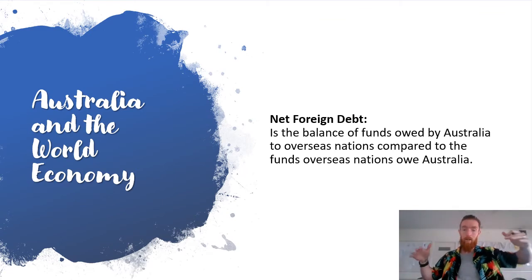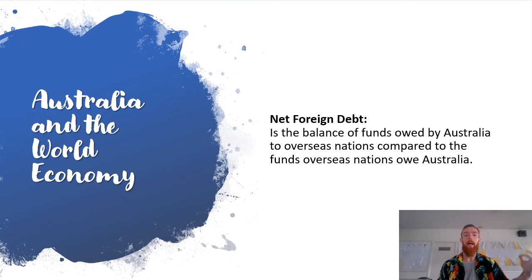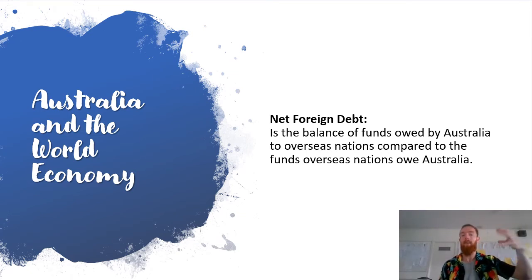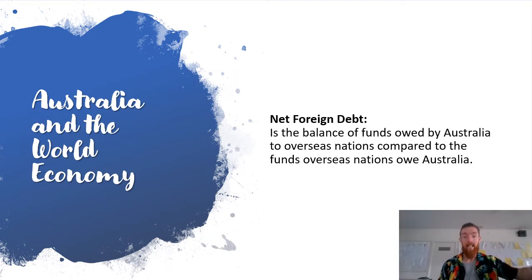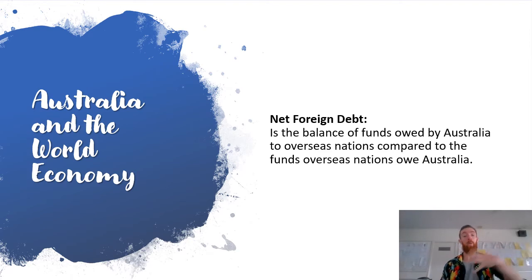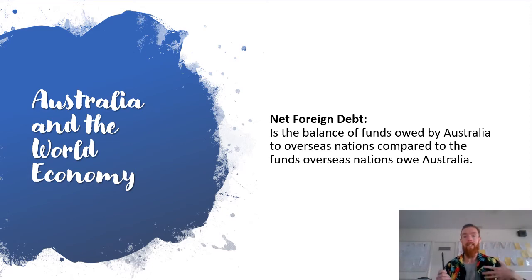So, net foreign debt. Net foreign debt is the balance of funds owed by Australia to overseas nations compared to the funds those nations owe Australia. A lot of students make the mistake of thinking net foreign debt is only what we owe other countries — it's also what they owe us. It's the balance of the two. You always need to include both of those things to achieve full marks in any discussion about net foreign debt.